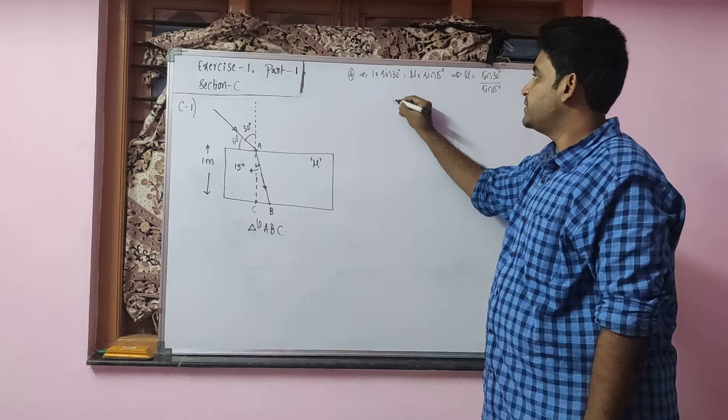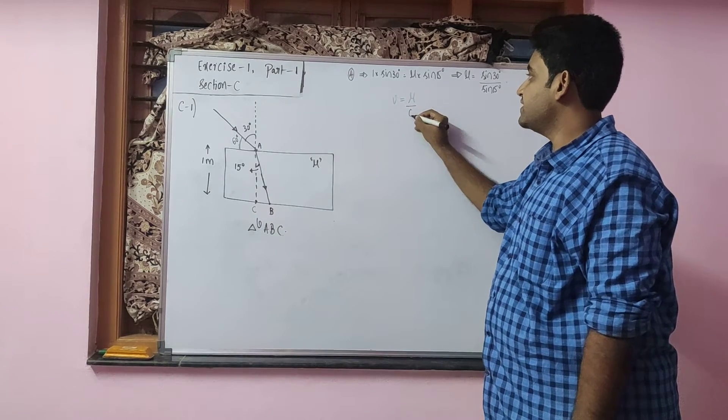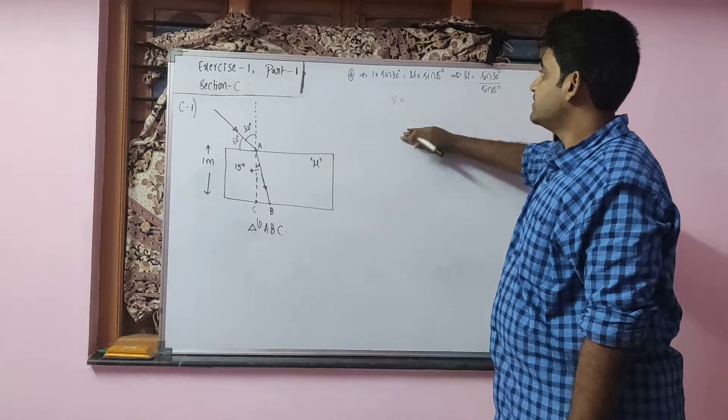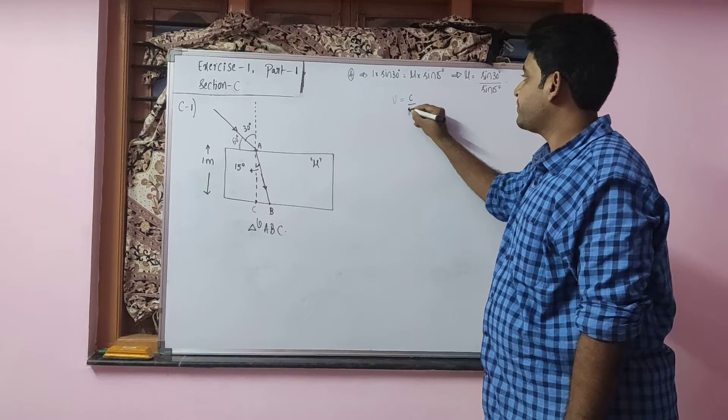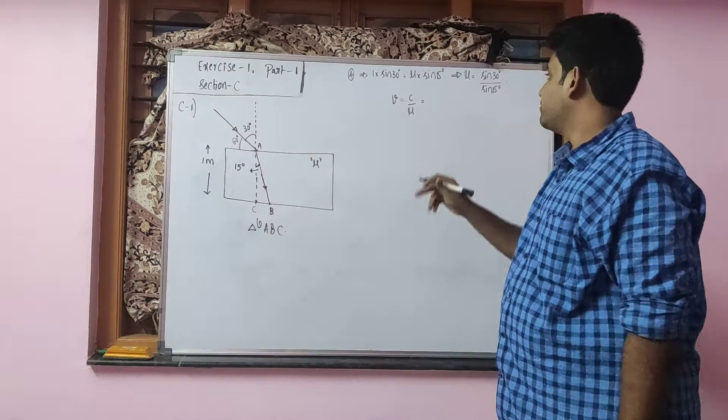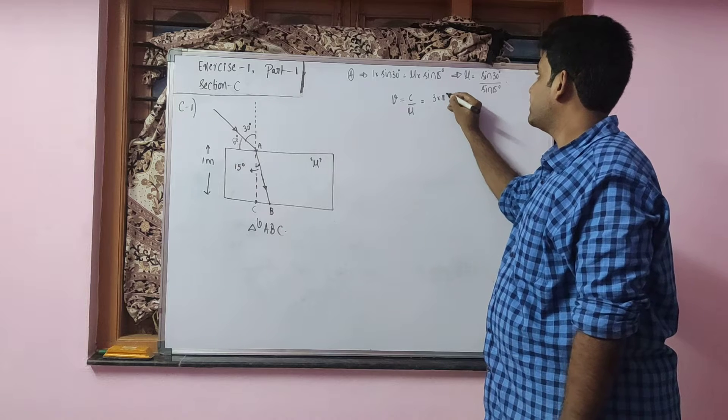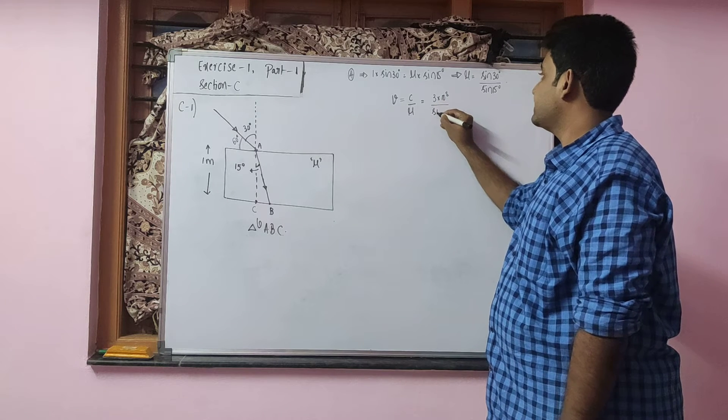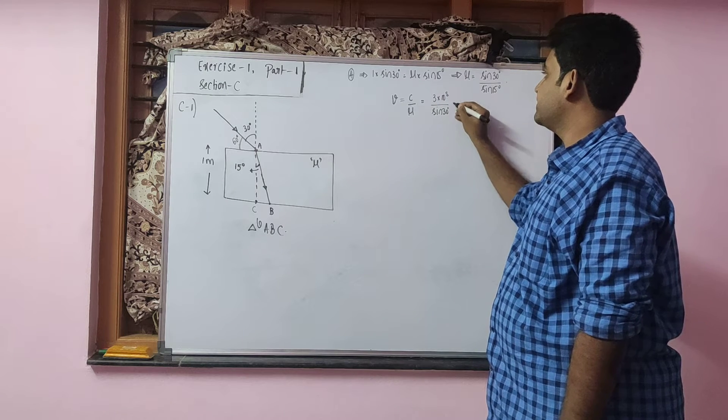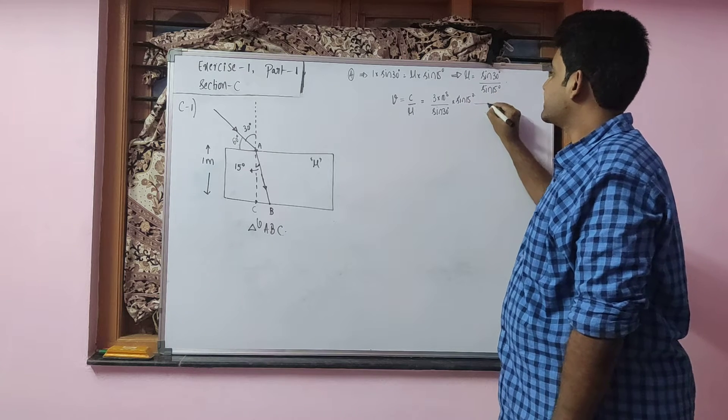Similarly I know speed of the light inside any medium will be equals to C by mu. C value is 3 into 10 power 8. Mu you can substitute this value. So this will be 3 into 10 power 8 divided by sine 30 divided by sine 15. That sine 15 will come to the numerator. Let us keep it aside.